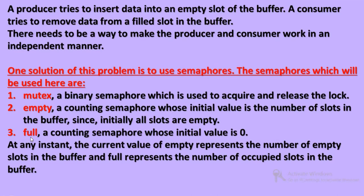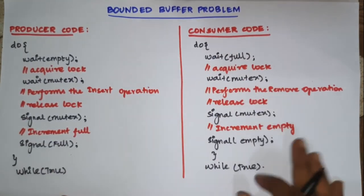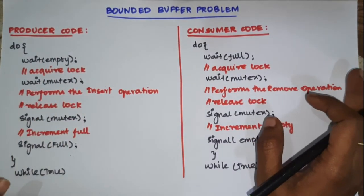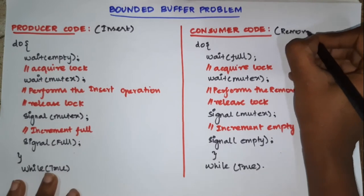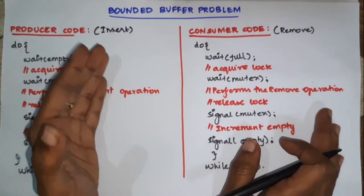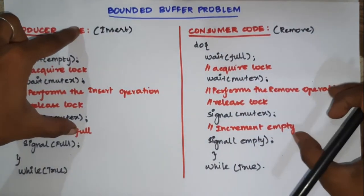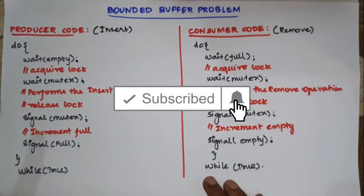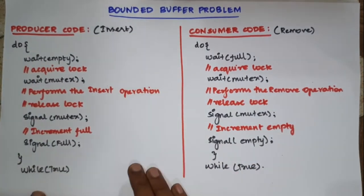So we will overcome the producer-consumer problem this way. This is the bounded buffer problem, or producer-consumer problem. The producer and the consumer will simultaneously perform operations. The producer is for inserting data and the consumer is for removing data. So now we have a pseudo code — a do-while loop for producer and consumer: insert and remove operations.